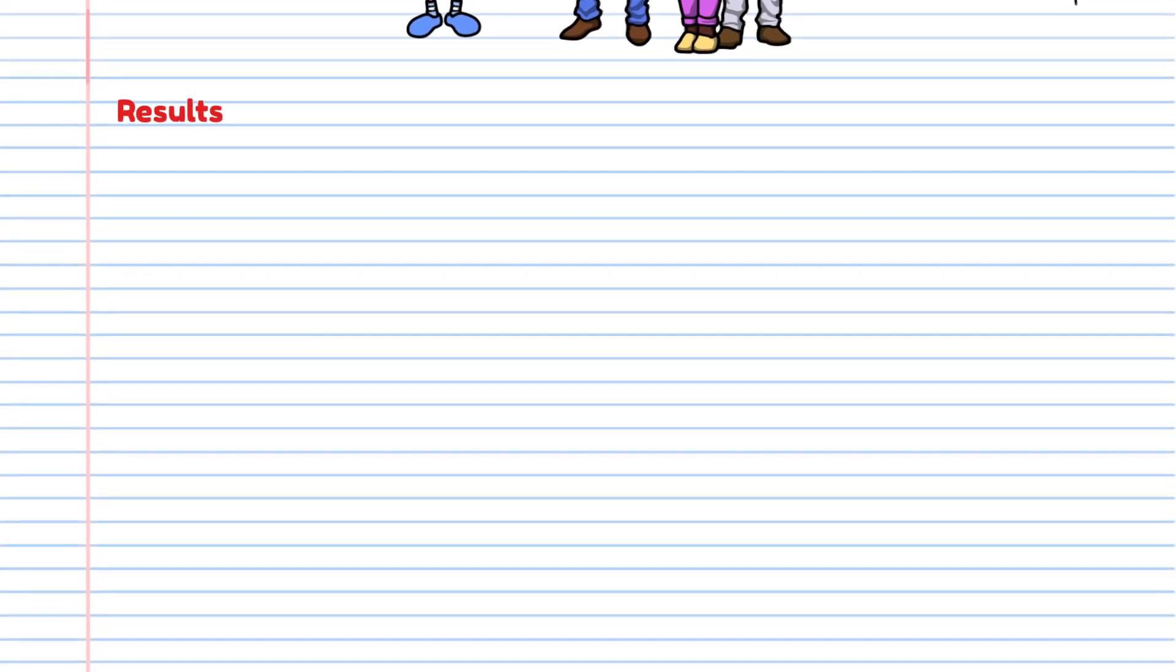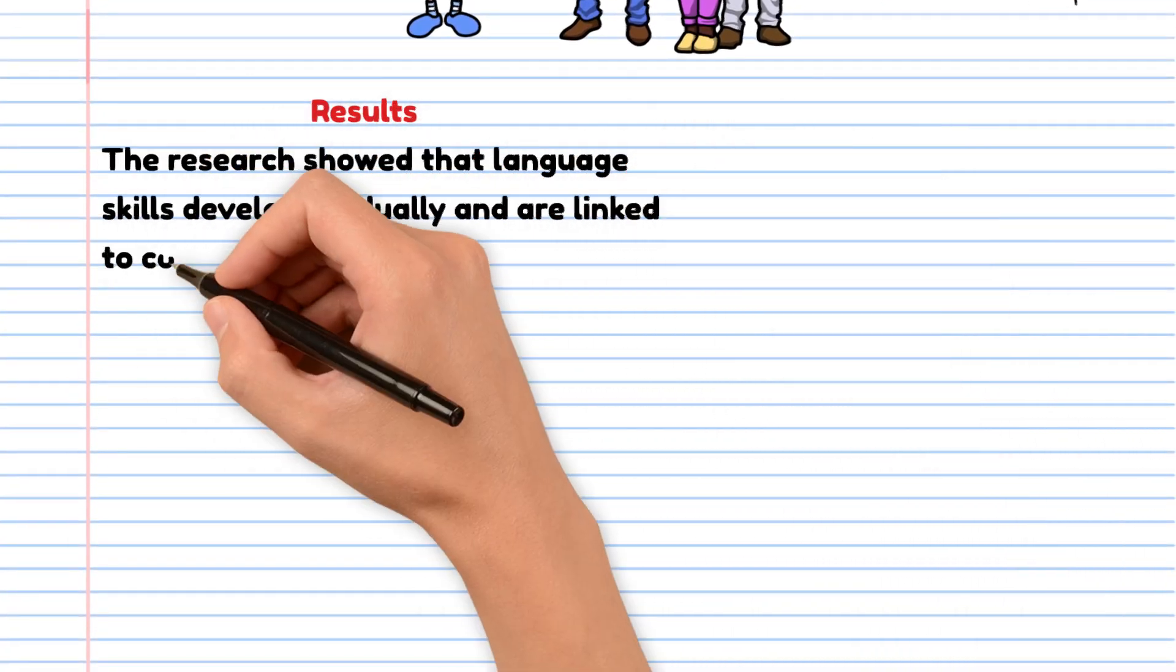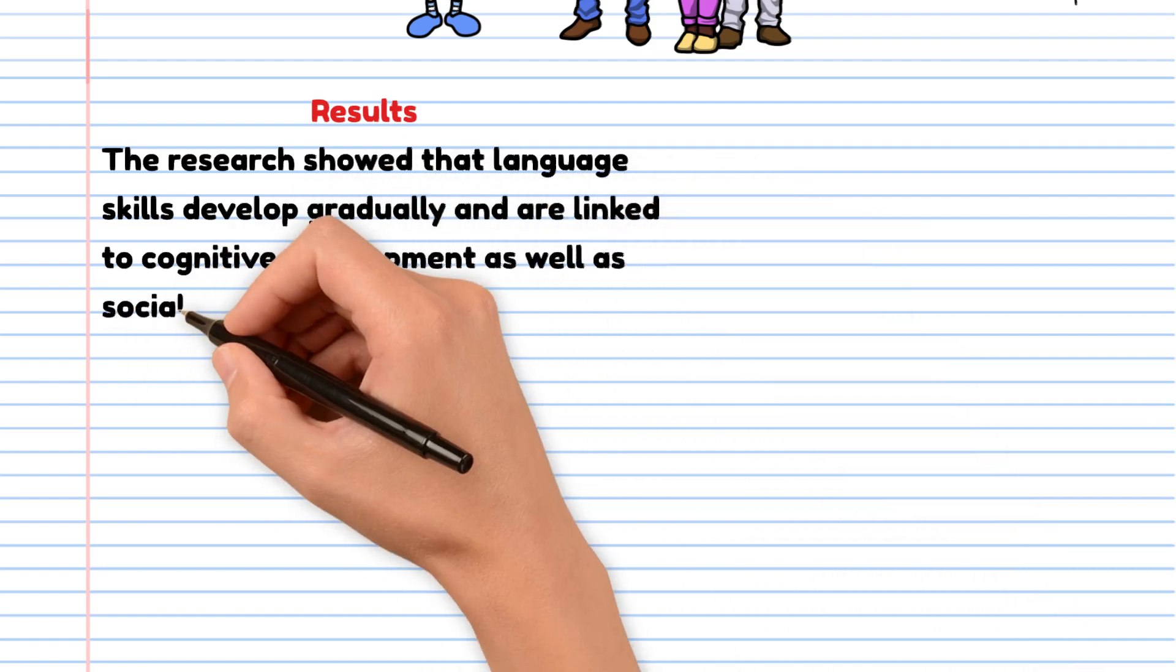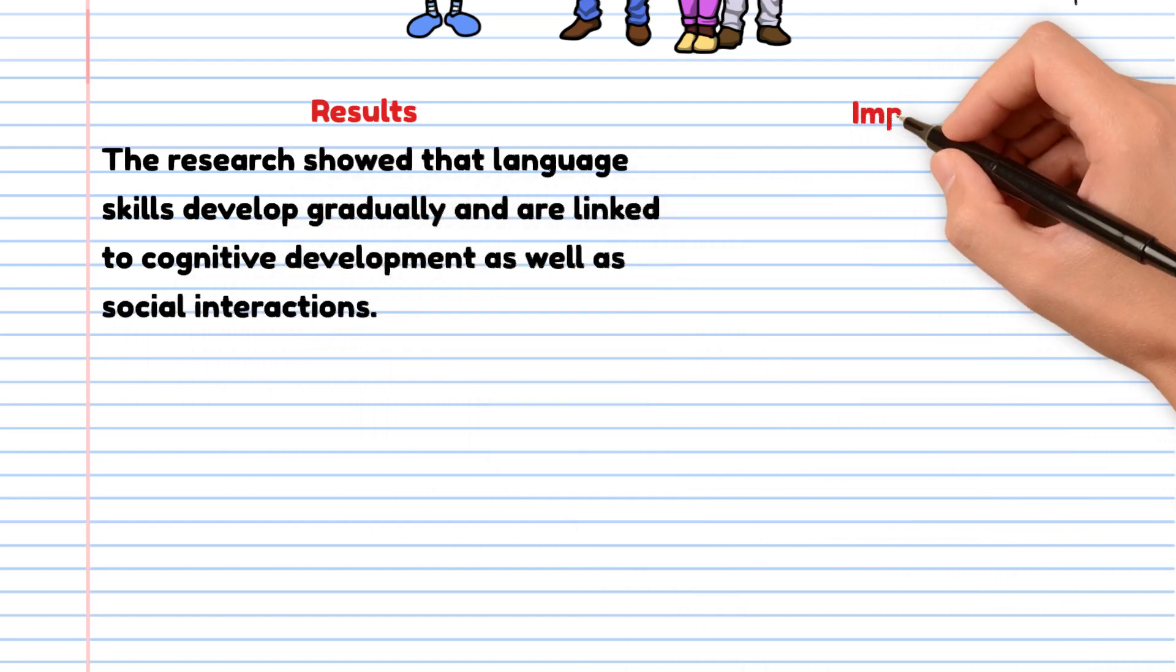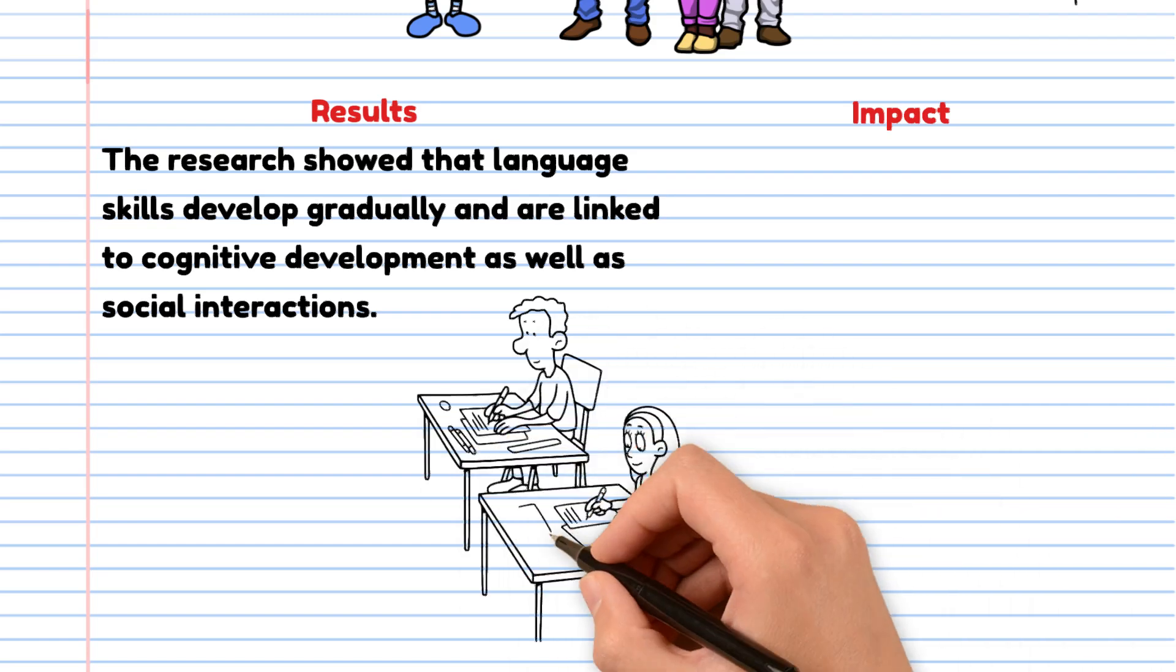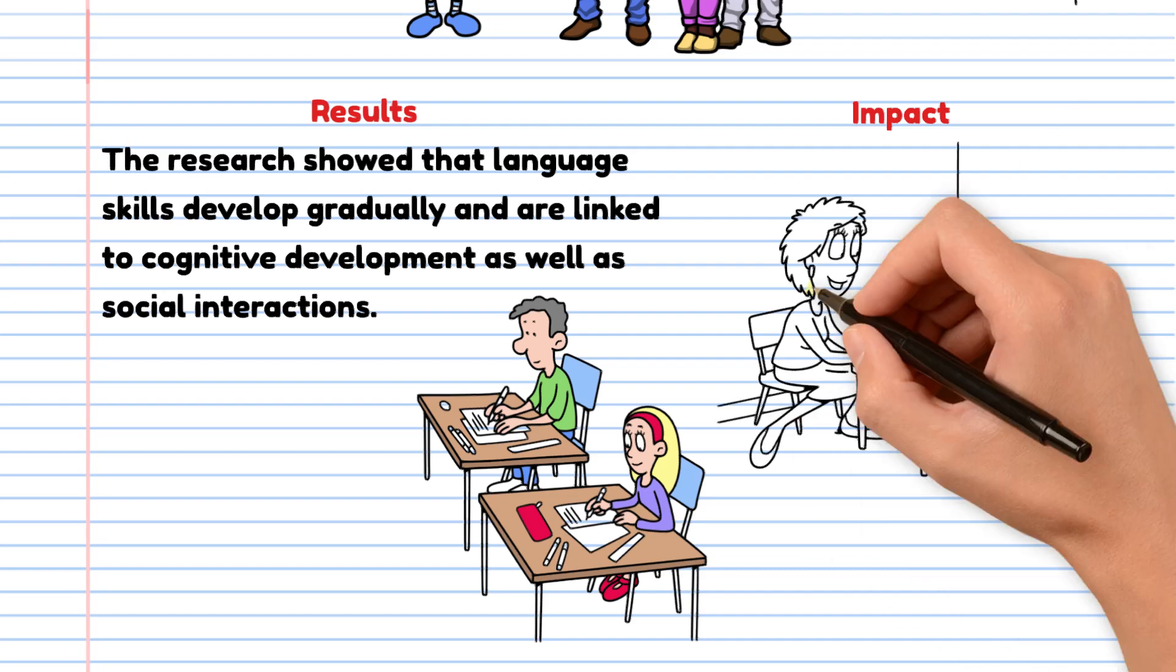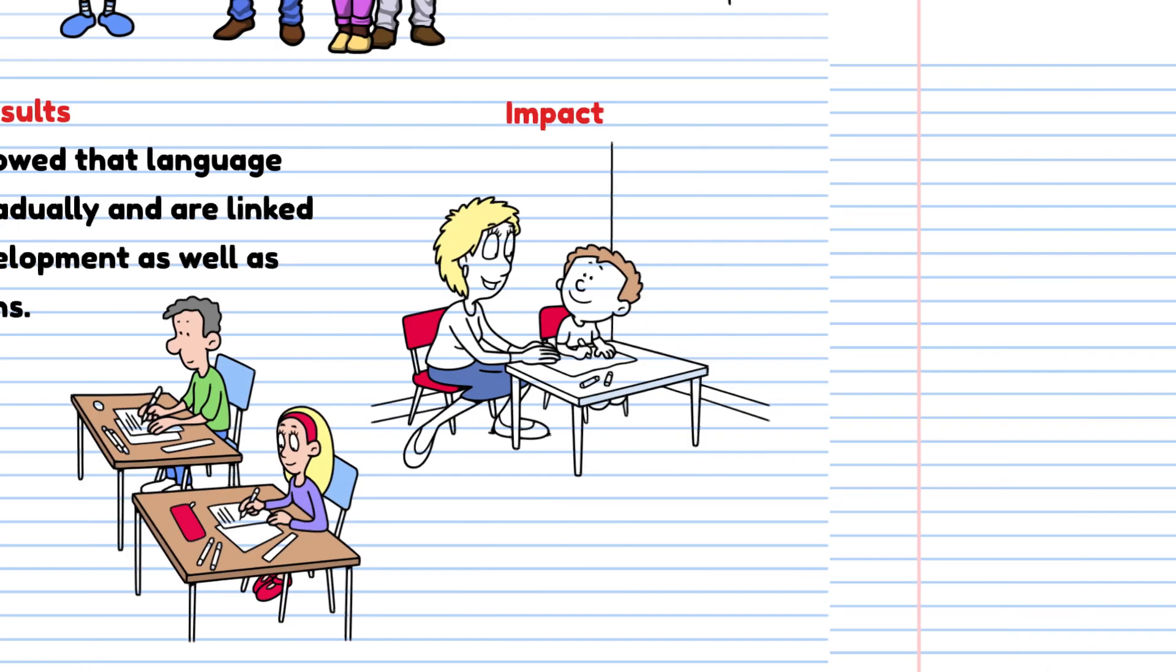Results: The research showed that language skills develop gradually and are linked to cognitive development as well as social interactions. Impact: This experiment significantly influenced the understanding of language development in children and contributed to the development of methods for early learning and correction of language disorders.